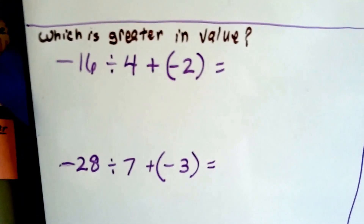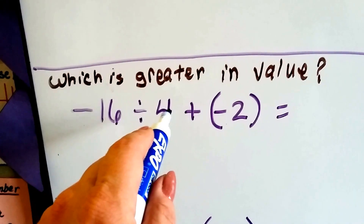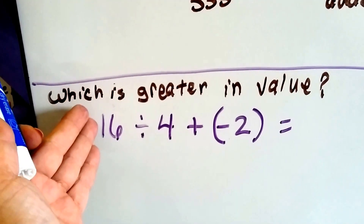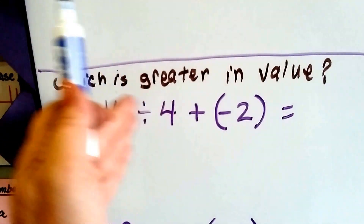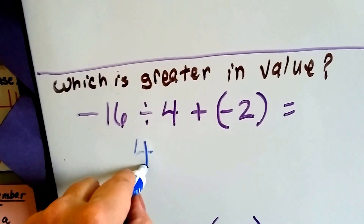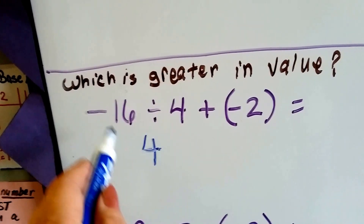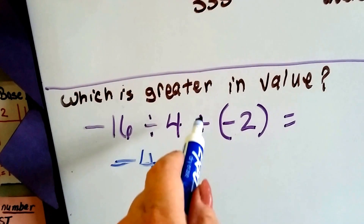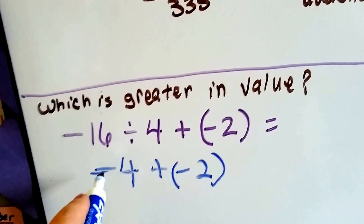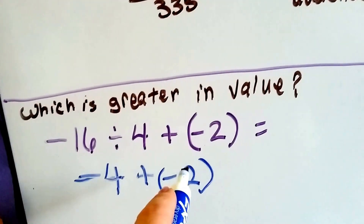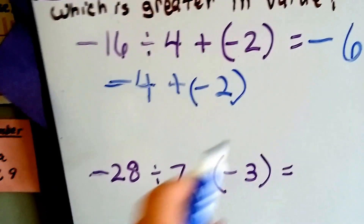Let's see which has the greater value — this one or this one. We're going to do a comparison of expressions. We've got negative 16 divided by 4. The absolute value is the value of the integer without its sign — how far away it is from 0. So we just do 16 divided by 4, which is 4. That's a negative and a positive — unlike signs — so it's going to be negative 4. Now we add negative 2. We're adding like signs, so 4 plus 2 is 6. We take the sign of the addends — it's negative. So we have negative 6 for that one.